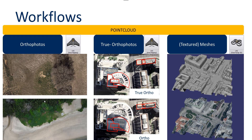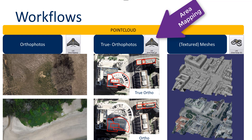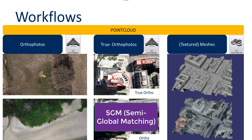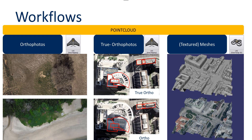The second workflow is the true orthophoto workflow, which also runs through the area mapping project type. We will introduce semi-global matching for two-and-a-half-D data and show how the true orthophoto is processed in a very high automatic way, and also how the point clouds generated are pre-filtered for this process. This allows us to create very good-looking buildings where the rooftops have sharp edges, which is typically one of the major criteria for true orthophotos.